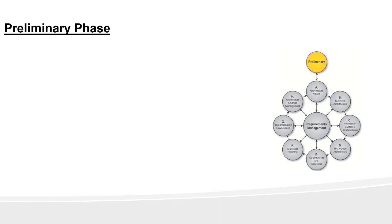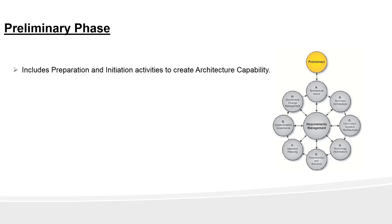Let's start with ADM, the Architecture Development Method, and look into the preliminary phase. In this section we will cover the objective, steps, and key aspects of the preliminary phase. The preliminary phase of ADM consists of preparation and initiation activities done even before you get into the main ADM cycle. This phase is about defining where, what, why, who, and how we do architecture in the enterprise.